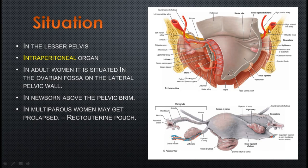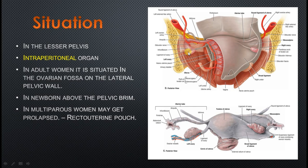The lateral surface is related to the pelvic wall. Even though the ovary is situated in the lesser pelvis, it is an intraperitoneal organ covered by peritoneum. The uterine tube has to pierce an opening in the peritoneum and then comes to lie near the ovary. That is why in females the peritoneal cavity is an open cavity - through the ostium of the uterine tube it communicates with the exterior.